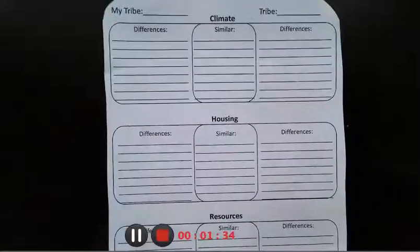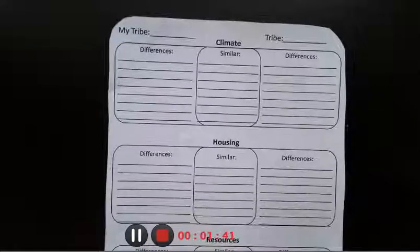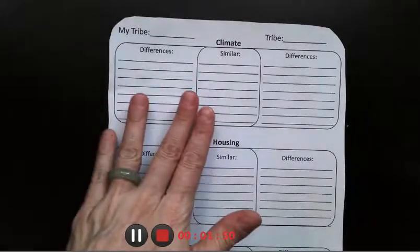So today in reading you had to compare your tribe with one of the other two tribes that we were learning about. So you had to look at information from the Yokut, the Chumash, and the Paiute. Okay, so you are going to utilize the chart to actually pull the information into the similarity and difference charts for climate, housing, and resources.